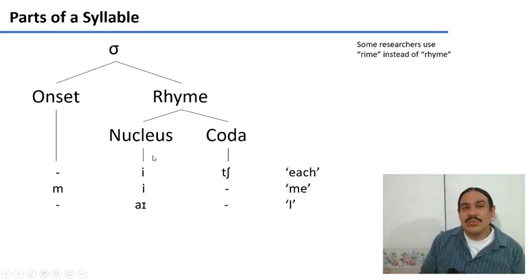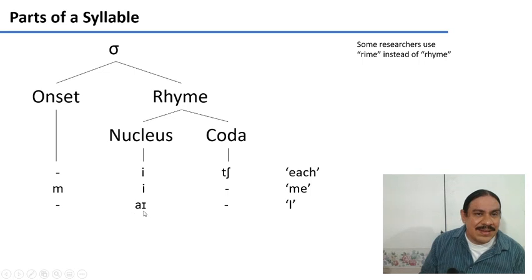Finally, again, the only part you really need is the nucleus. So the word I has the diphthong aɪ in it. And it doesn't have any consonants either before or after it. So the syllable is just a rhyme with a nucleus, which is aɪ.